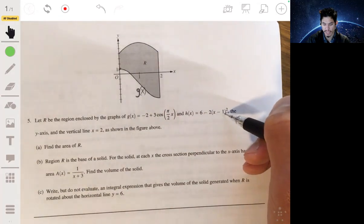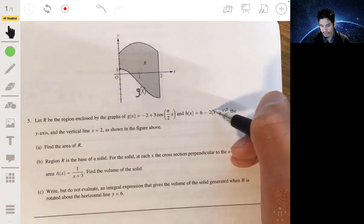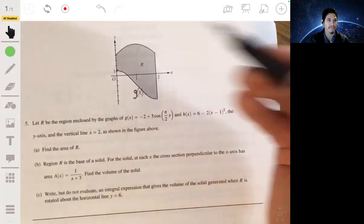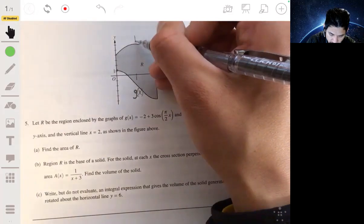And same thing here, you can check when you plug in 0, 6 minus 2 times this whole thing will be 1, and you get 4. So this is g(x), this is h(x).